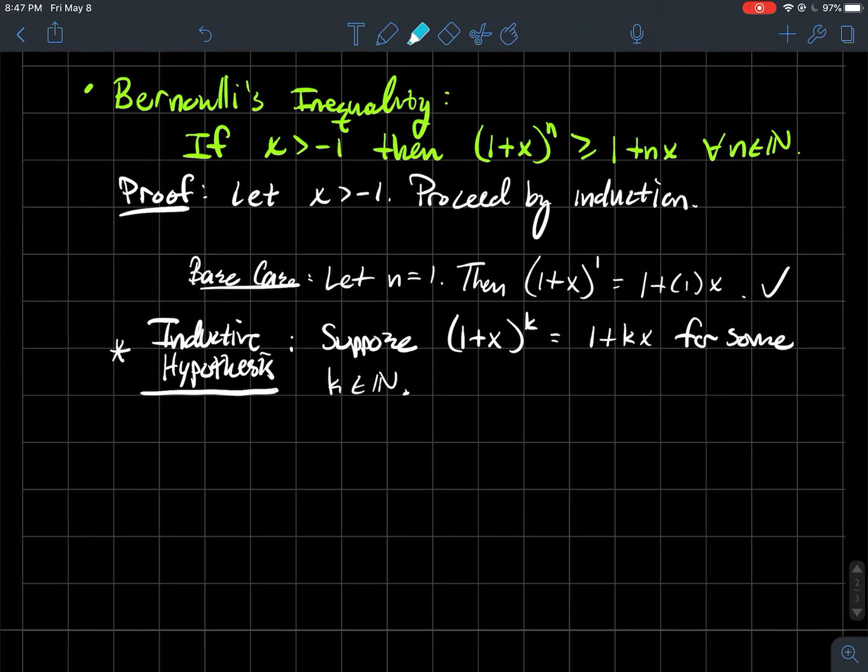Now let's do the inductive hypothesis. So we're going to suppose that one plus x to the k is greater than or equal to one plus kx for some natural number k. And remember, we need to show that this is also true when I change these to a k plus one, I need to show that.